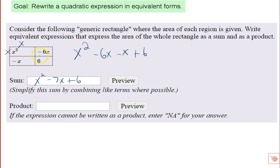And then to get this minus 6x, I would take x times something to get minus 6x, so it must be minus 6.